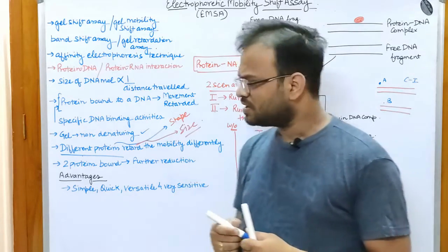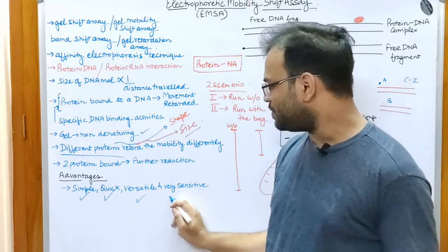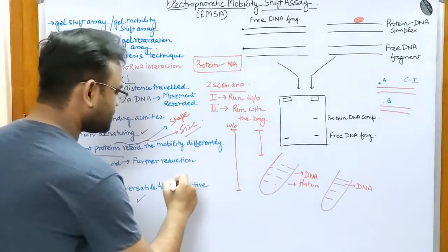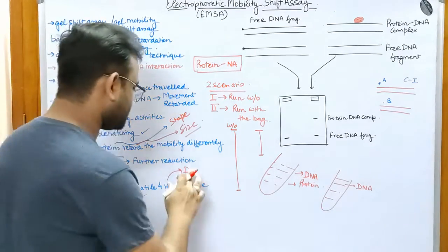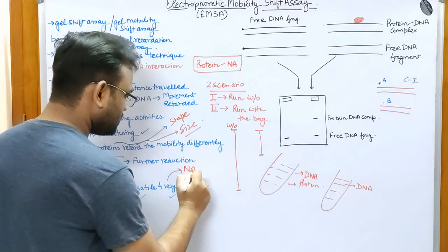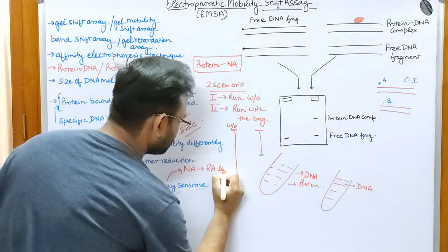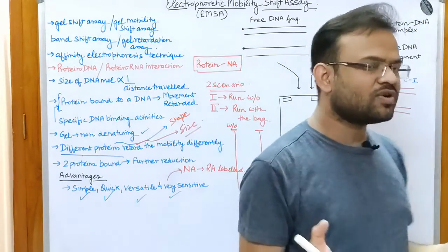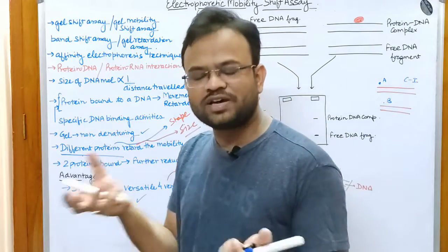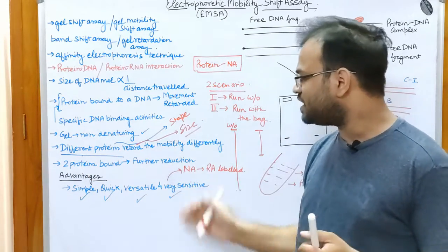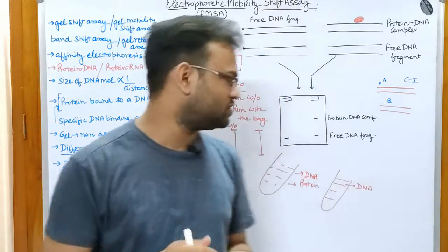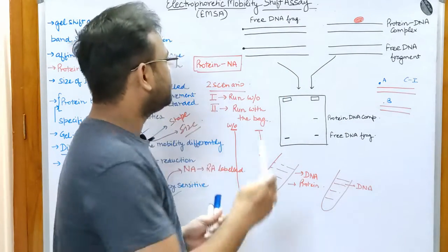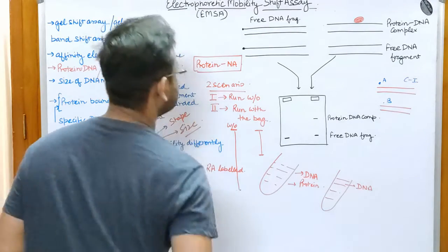The advantages of this technique are that it is simple, quick, versatile, and very sensitive. Its sensitivity can be further increased if the nucleic acid is radioactively labeled — this allows precise identification of where the DNA is, increasing sensitivity many fold.